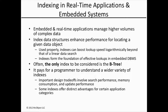As systems manage higher volumes of complex data, developers increasingly turn to index data structures to enhance performance in locating a given data object. Used properly, indexes can boost speed logarithmically beyond that of a linear data search. However, when indexing is contemplated, the first and often the only index to be considered is likely to be the B-tree. Out of all the indexes that can order records in database management systems, only B-trees are offered universally.